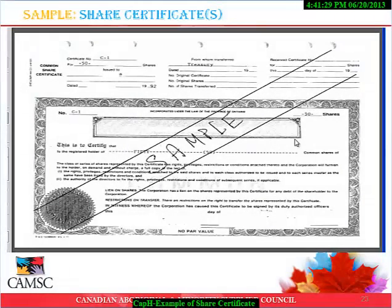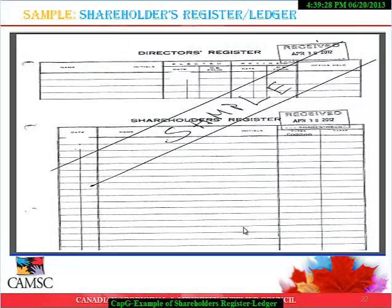Here's an example of what a shareholders' share certificate looks like. The certificate should tie in with what you provided in your CAMSI application, your shareholders' ledger, and your current financial statements. The Shareholders' Ledger or Registry is a document that should show all the transfer and purchase of all shareholders and the type of shares they hold. It should also include the cancelled shares.